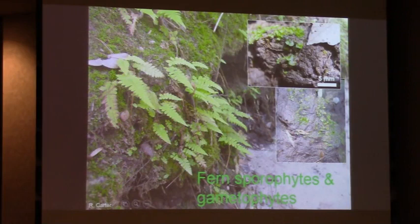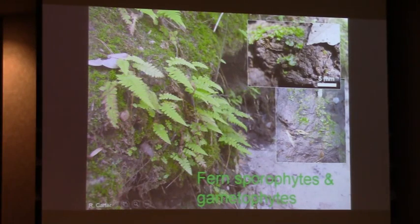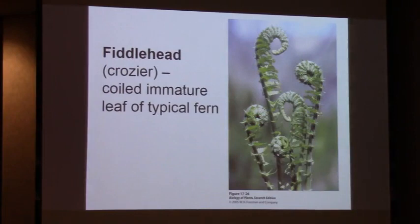These are the sporophytes, and these are the gametophytes. The gametophytes are tiny - the gametophyte is the sexual stage of the life cycle, and the sporophyte is the spore-producing stage. Ferns typically have leaves that begin development as a fiddlehead or crozier, coiled - circinate vernation. If you look at the lower surface of a fern leaf, you see these odd-looking structures. Students invariably say they're spores, but not really - the spores are produced by these structures, but the structures themselves are sori.